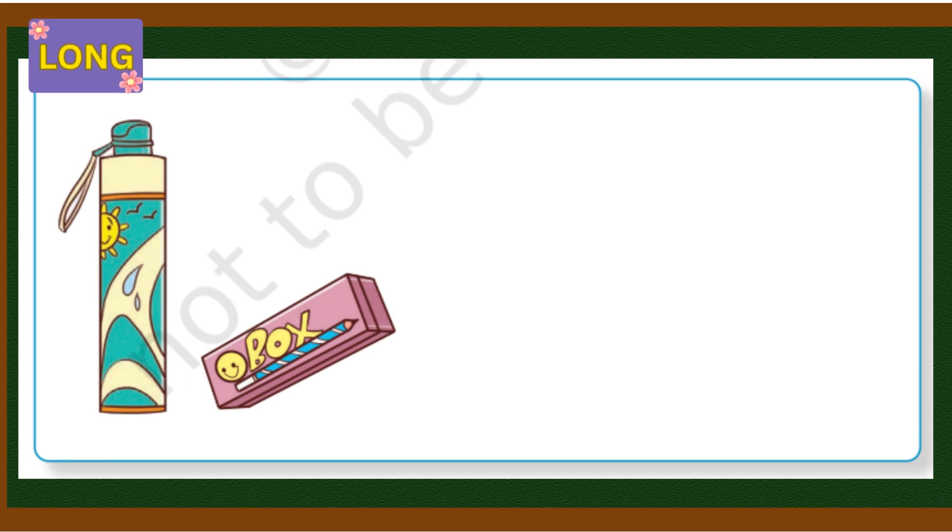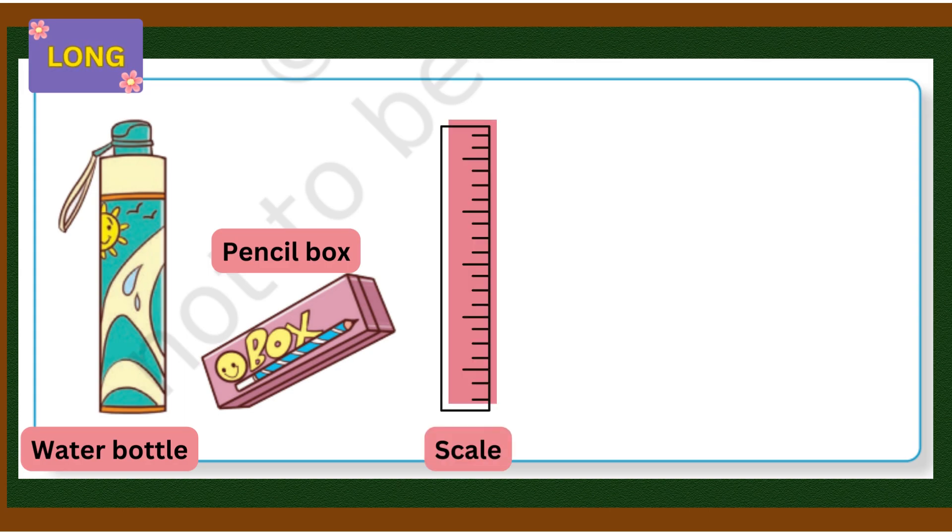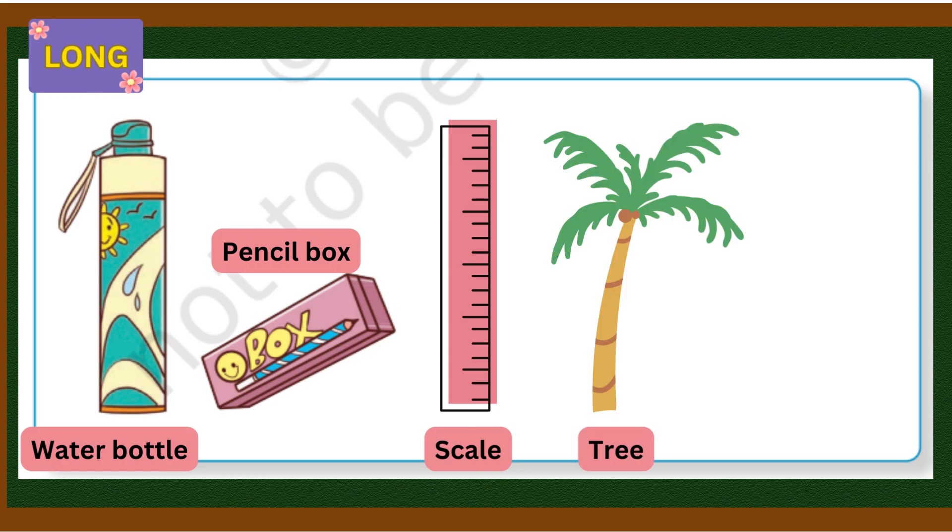Now let's see examples of long. Here two things are already drawn: one water bottle and one pencil box. Let me draw some more examples of long things. I have drawn an example of a scale - it also looks long. I have drawn another example of a truck. The truck's shape is also long. Then pencil - our pencil is also long. In this way you should also try to draw some examples.